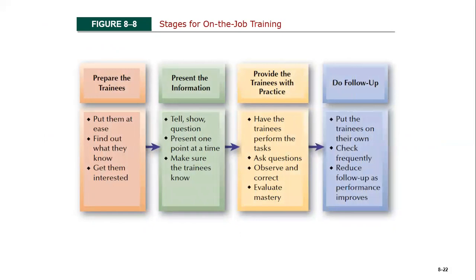Moving forward — what are the various stages of on-the-job training? There are four stages every employee must follow. The very first stage is to prepare the trainees. Put them at ease, make them comfortable, and tell them not to worry — they are here to learn and will make mistakes. Find out what they already know.